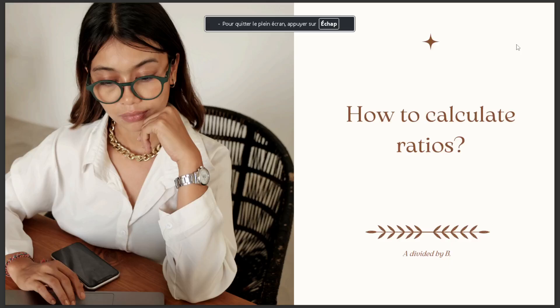In today's video we're going to talk about how to calculate ratios. The answer is a divided by b. So that's it for today. I hope this is the answer you're looking for. If you like this video, don't forget to like and subscribe.